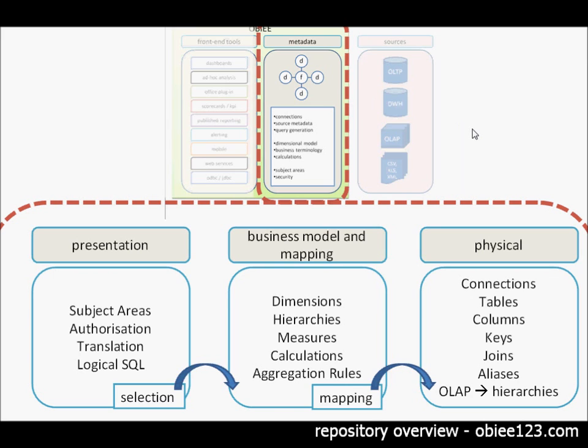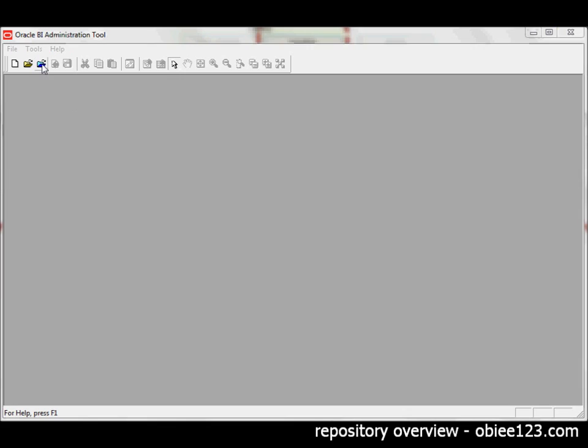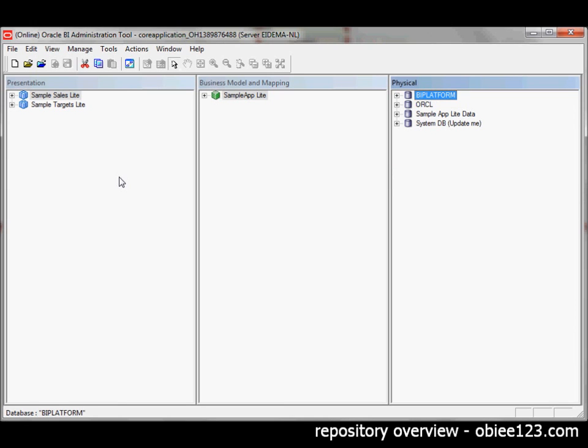Now, if you open a repository in OBIEE, you are editing the repository through the administration tool. If you fire up the administration tool, you will see that these three layers are reflected over there. So here's the administration tool. I'm making an online connection to a running Oracle BI server. And as you see, here is the physical layer, the business model and mapping layer, and the presentation layer.